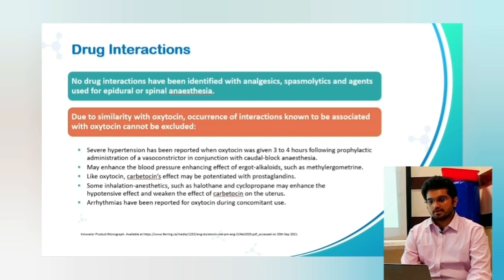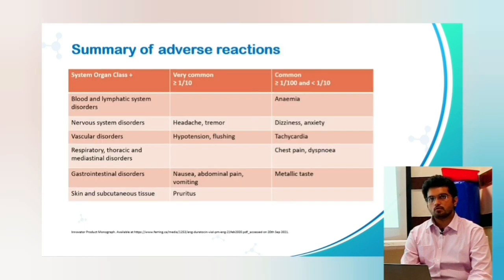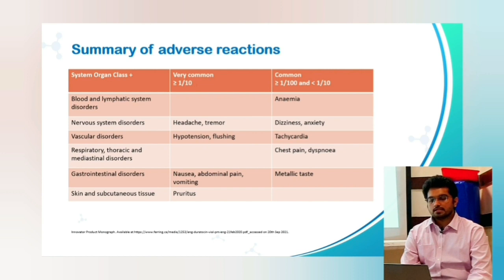Adverse effects summary by system organ classification: Blood and lymphatic system — anemia may be seen. Nervous system disorders — headache, tremors, dizziness, and anxiety. Cardiovascular — hypertension, flushing, and tachycardia. Respiratory — chest pain and dyspnea. Gastrointestinal disorders — nausea, vomiting, abdominal pain, or metallic taste. Skin and subcutaneous tissue — pruritus.